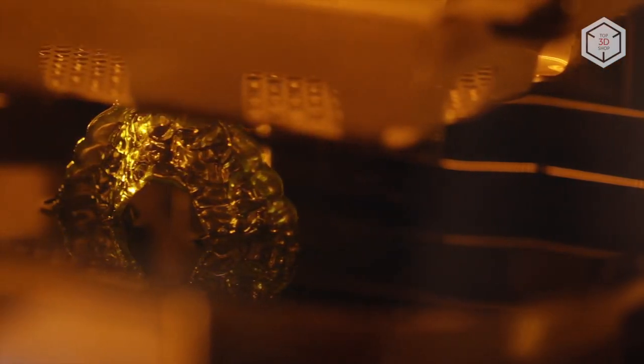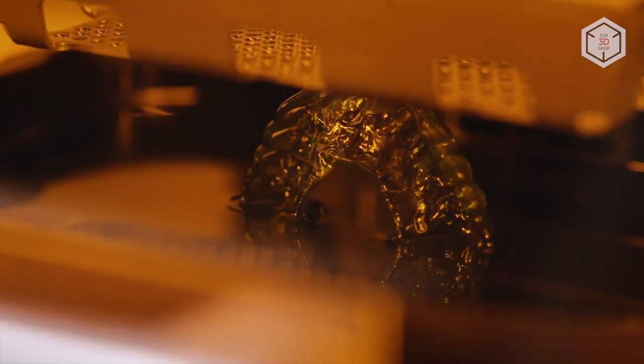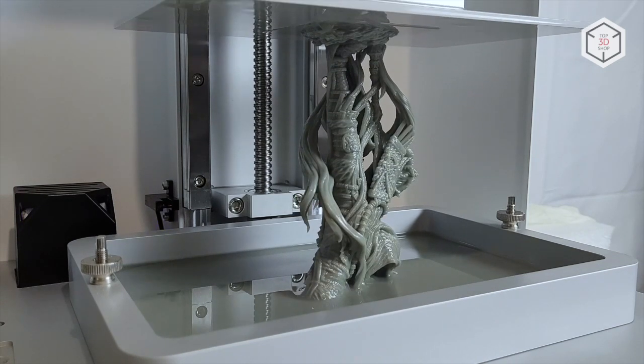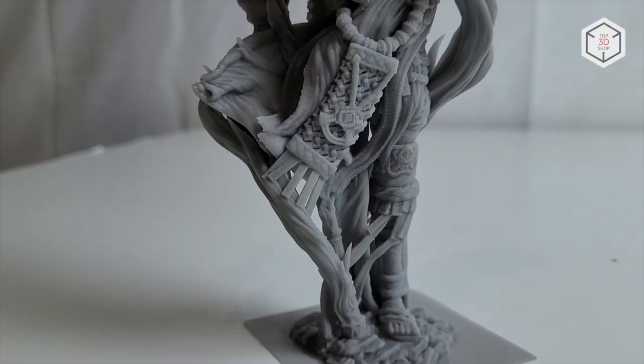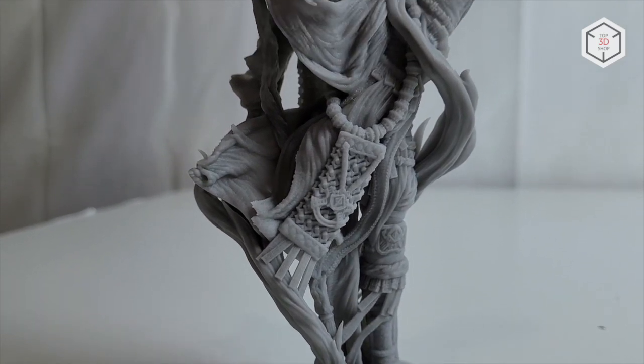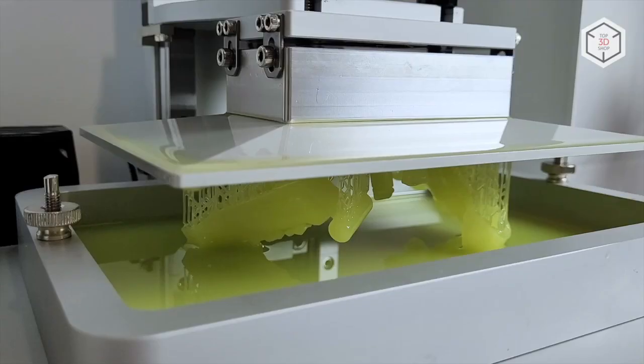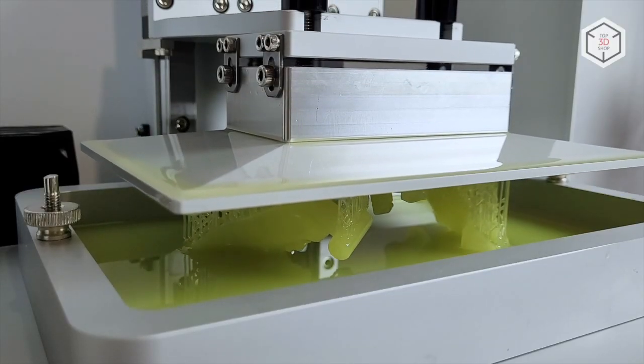SLA, DLP and LCD technologies, all of them being based on VAT photopolymerization process, use liquid resin cured by a light source to print a part. Resin 3D printing allows for highly detailed prints with a perfectly smooth surface finish with certain post-processing. It's a great choice for creating rather complex objects with flawless look and feel when precision is a key point.